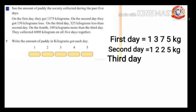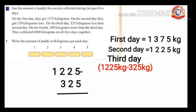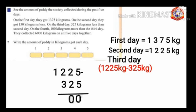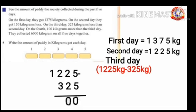To find out the amount of paddy got on the third day, subtract 325 kilograms from 1225 kilograms. 1225 minus 325: 5 minus 5 is 0, 2 minus 2 is 0, 2 minus 2 is 0. We can't subtract 3 from 2, so borrow 1 from 1 — 2 becomes 12 and 1 becomes 0. 12 minus 3 is 9: nine hundred.